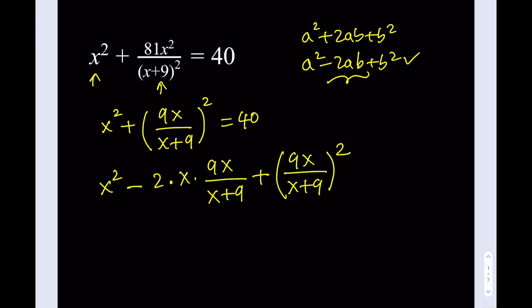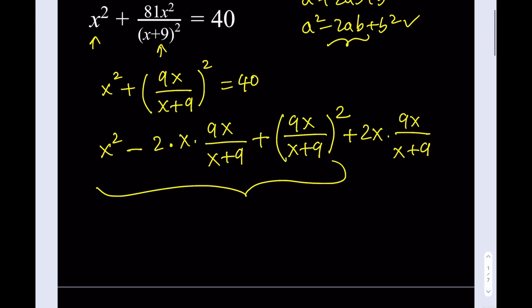It's going to be like x squared minus... Let's make one thing clear: our a is x and b is going to be 9x over x plus 9. What I'm trying to do is write this as a perfect square, and the missing term in this case is going to be 2 times x times 9x over x plus 9, plus I have the 9x over x plus 9 squared.